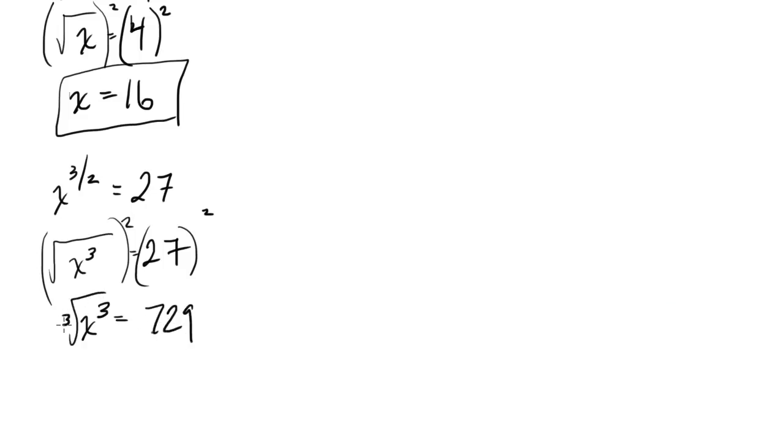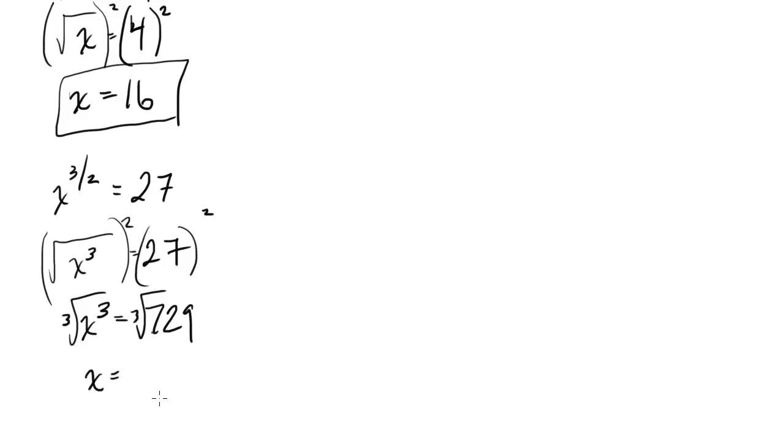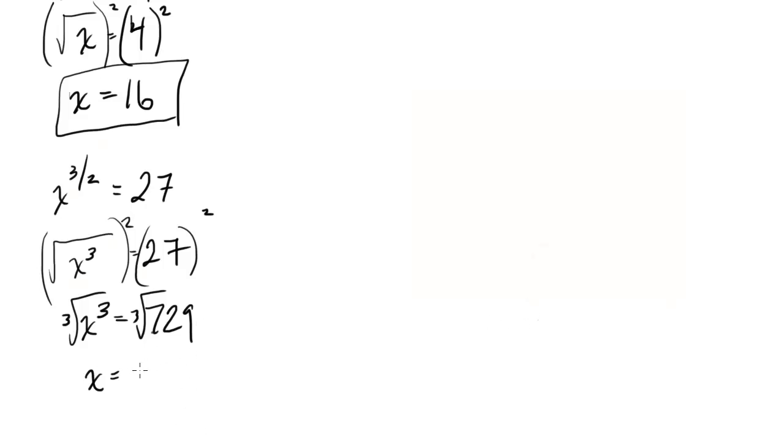And now I go ahead and cube root both sides. And when I do that, I'm going to get, let's see, 729 cube root. Oh, I messed it up. Well this calculator is being annoying. Hold on one second. Oh, it does, it's a cube root right here. So 729 cube rooted is 9. So this turns out to be 9 for that example.